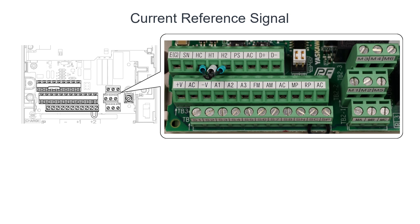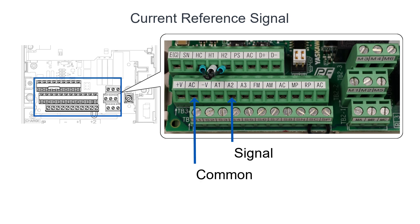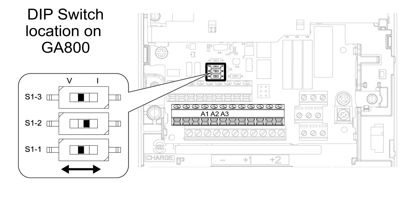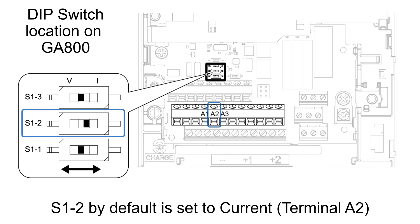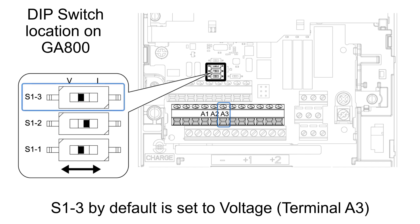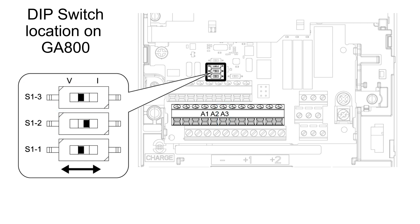If the reference signal uses current, check the wiring to verify it is correct — make sure the signal wire connects to A2 and the common to AC. Second, check the DIP switches on the drive control board. S11 by default is voltage for terminal A1. S12 by default is current for terminal A2. S13 by default is voltage for terminal A3. Once you have verified the DIP switch settings and wiring, try running the motor again.